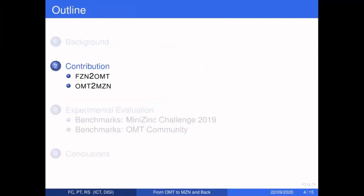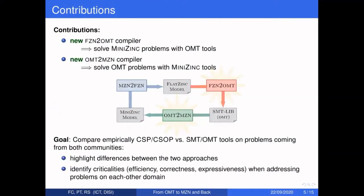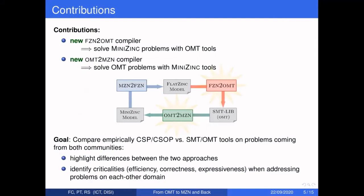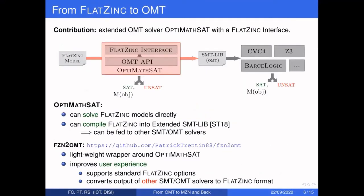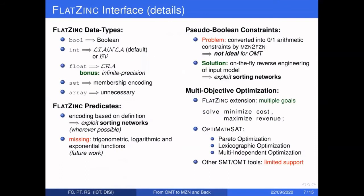The main contribution of this work is the realization of two compilers: a FlatZinc-to-SMT compiler and an OMT-to-MiniZinc compiler. Thanks to these tools we can empirically compare problems from both communities. The first tool is a FlatZinc-to-SMT translator embedded in OptiMathSAT, which can parse FlatZinc models directly and produce an SMT translation so that any SMT and OMT solver can attempt to solve it.